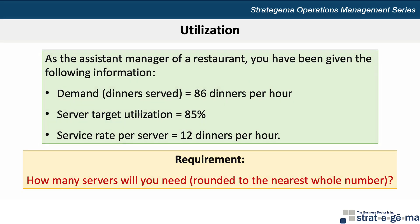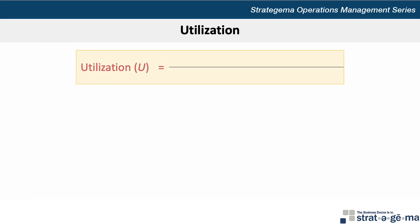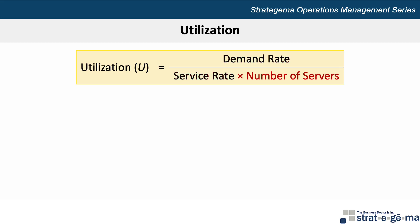We can solve this problem by applying the formula for utilization, where utilization u is equal to the demand rate divided by the service rate times the number of servers.